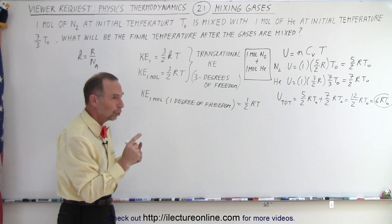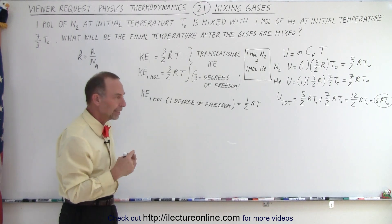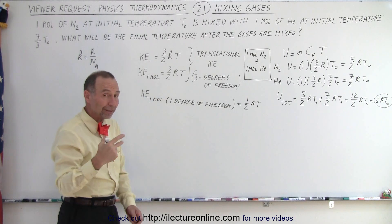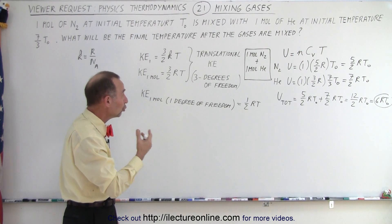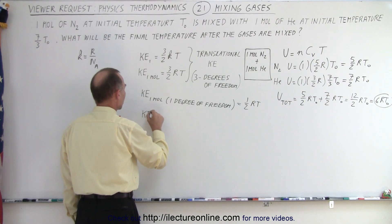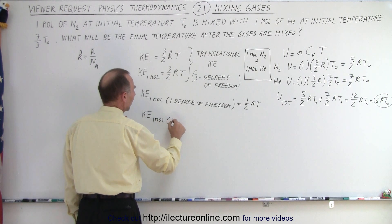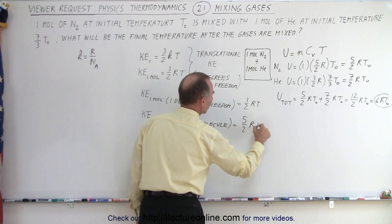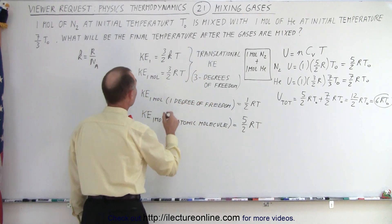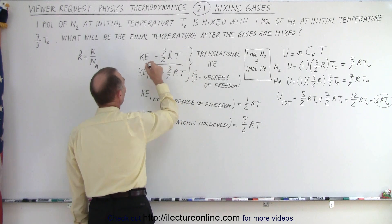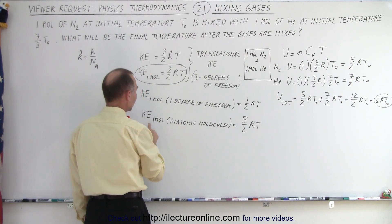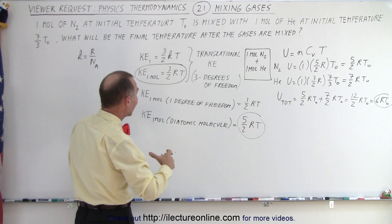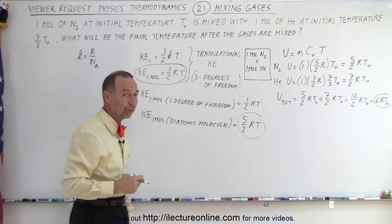If a molecule is a diatomic molecule, it can also have rotational kinetic energy — it can rotate in two additional ways. For a diatomic molecule there are an additional two degrees of freedom, so the kinetic energy for one mole of a diatomic molecule is equal to 5/2 RT. So if we add the kinetic energy of one mole of a monatomic gas plus the kinetic energy of one mole of a diatomic gas, we get the total kinetic energy of the molecules.